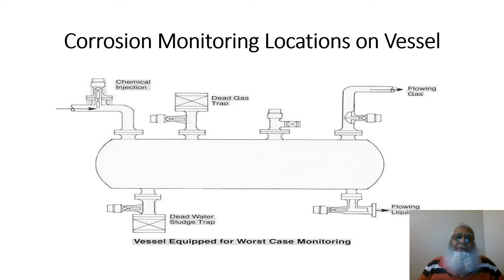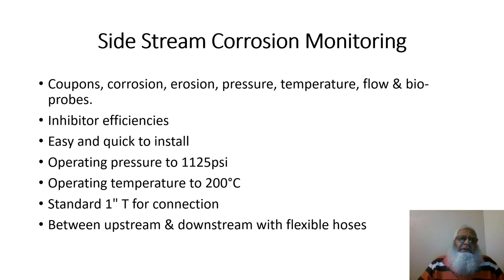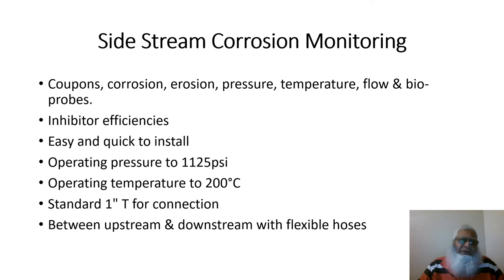This slide shows the side stream monitoring device, which is used to install coupons and monitor corrosion, erosion, pressure, temperature, flow, and bioprobes. It can also be used to check inhibitor efficiencies. It is easy and quick to install, with an operating pressure up to 1125 psi, an operating temperature up to 200°C, and uses a standard one-inch tee fitting for connection.